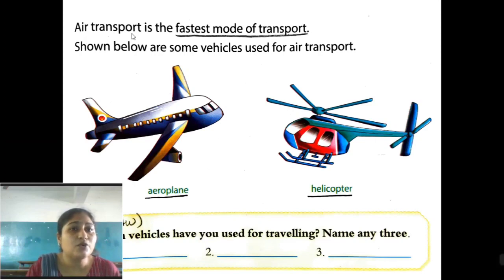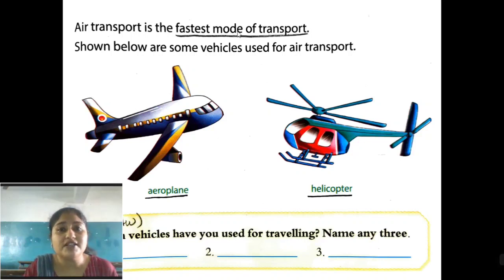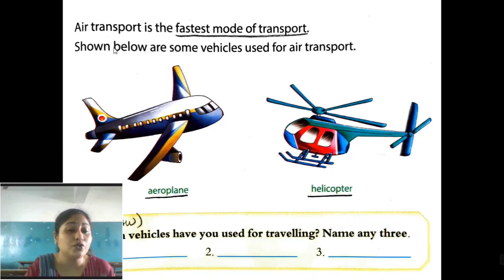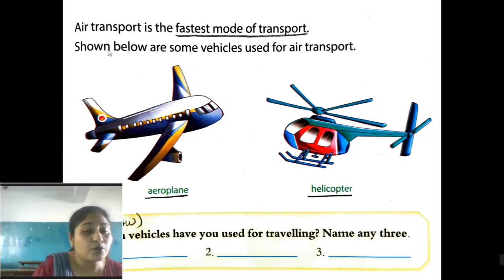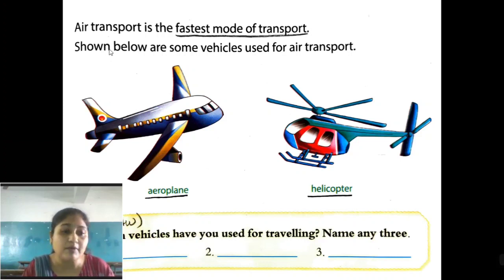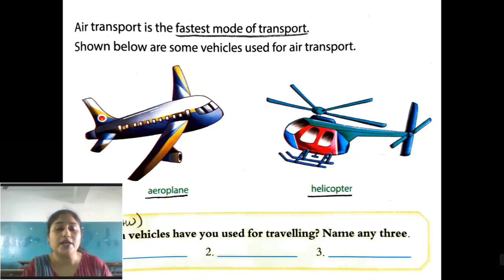Air transport is the fastest mode of transport — underline this. Blank is the fastest mode of transport — that is air transport. Within a few hours you can reach any place. Land transport and water transport are time-consuming, but with the help of air transport you can quickly get there within some hours.